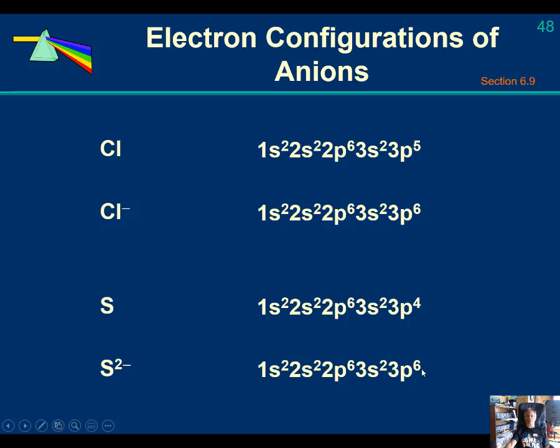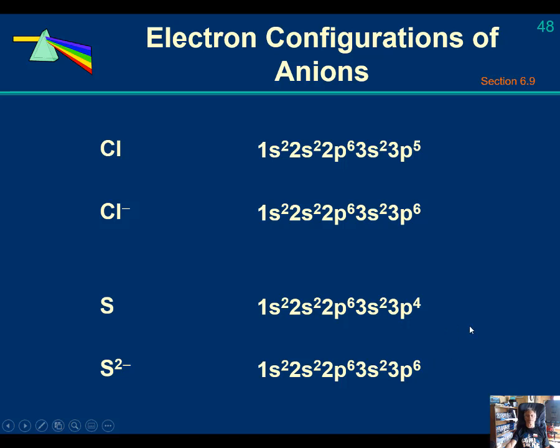Fill the S and the P subshells. 2 plus 6 is 8 electrons. That's the magic stability number.